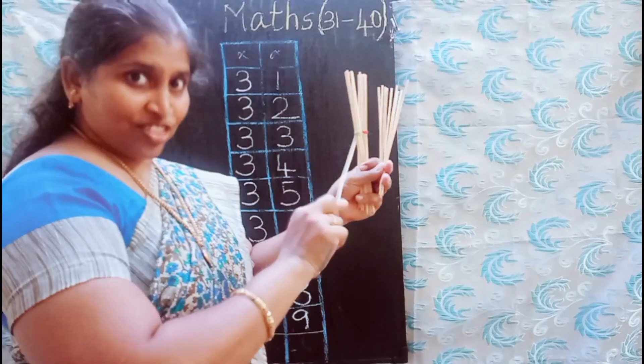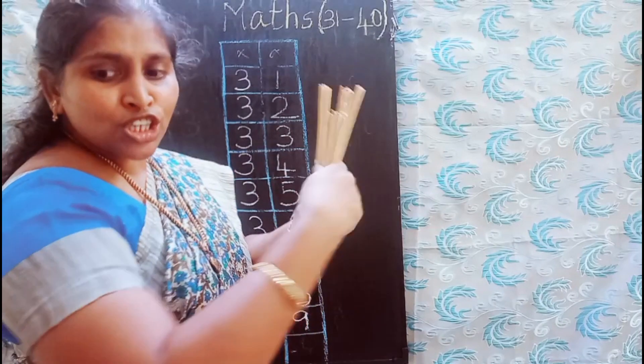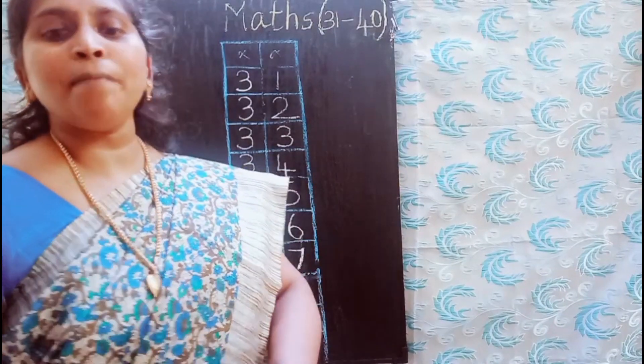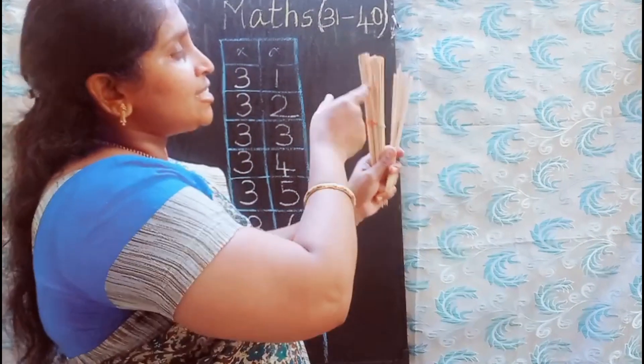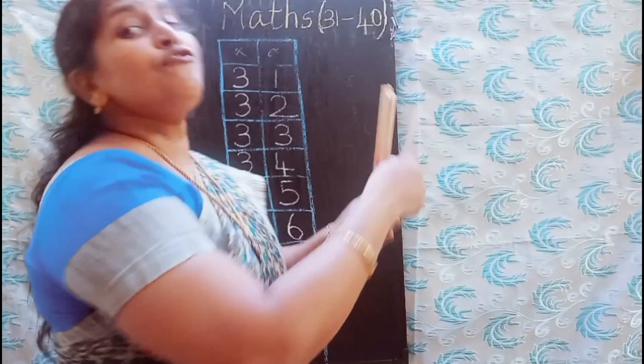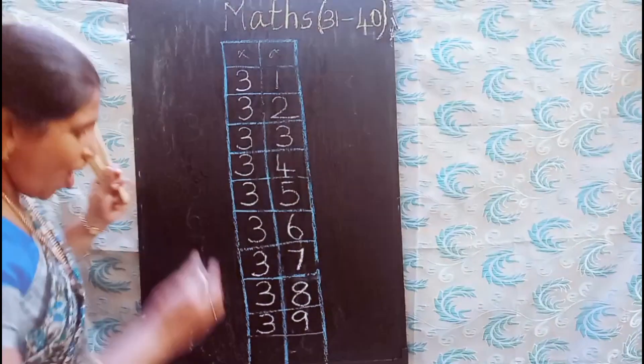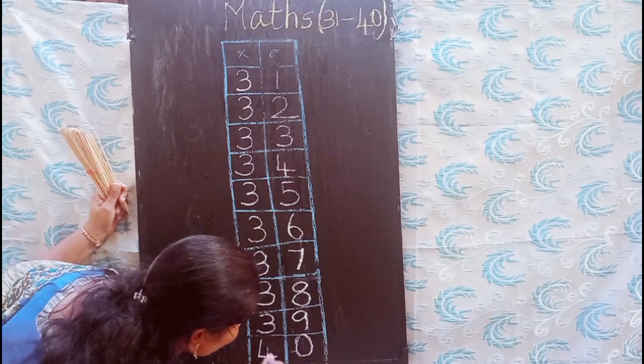Here I have thirty, right? This is also. This is ten. So I will make this a bundle. Okay, kids. Now it is four bundles. Then it is ten, twenty, thirty and forty. Okay. Four, zero, forty. Okay.